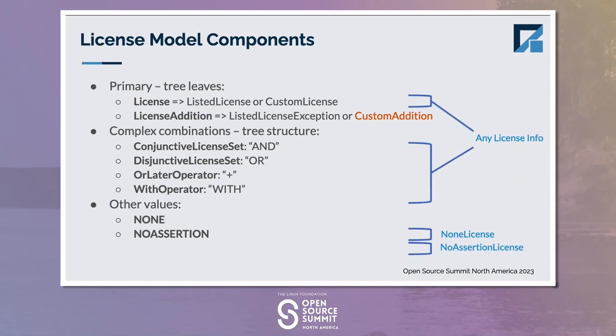The overarching class is AnyLicenseInfo — I don't think you should have the spaces in there, I think those are by mistake — but AnyLicenseInfo is the abstract parent class for licenses or combinations of licenses. None and NoAssertion are defined also as separate classes. There's an open issue to resolve between the release candidate and the 3.0 release: we're going to sort through whether to represent None and NoAssertion as separate classes, or how exactly to represent that. So that's one of the open topics for discussion currently.